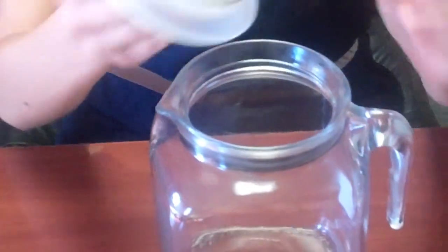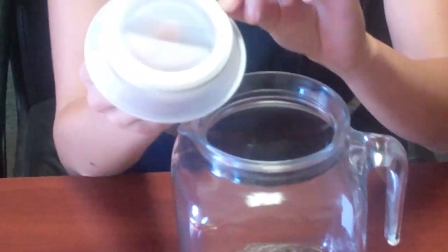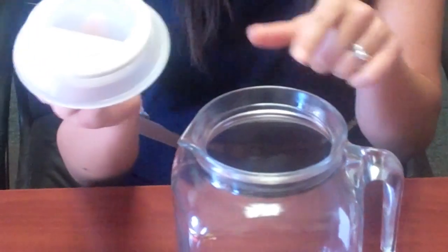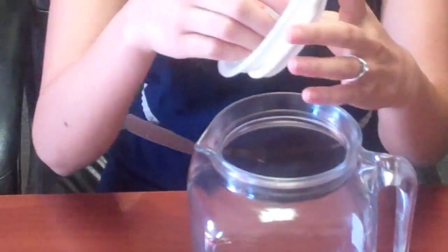So by twisting it, what we're doing is tightening this rubber gasket against the glass pitcher, forming an airtight seal.